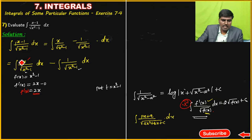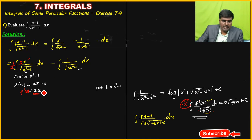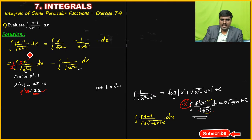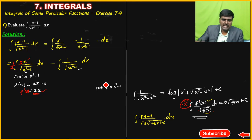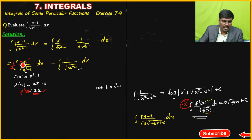f'(x) is equal to 2x. Since the numerator has x but the formula requires 2x, we multiply and divide by 2. So applying the formula: one-half times f'(x) by root of f(x), which gives 2 into root of f(x), that is 2 into root of x squared minus 1. Then minus the second part using the log formula for 1 by root of x squared minus a squared.